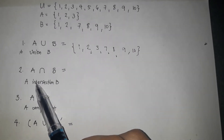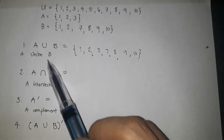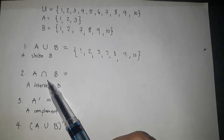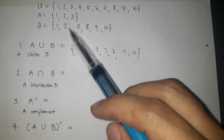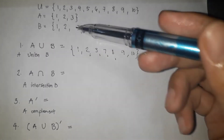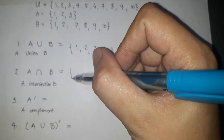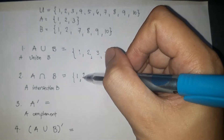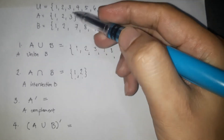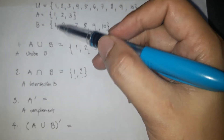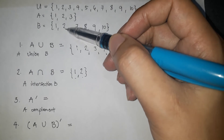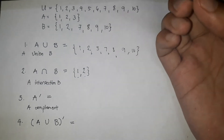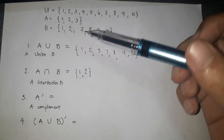The next operation is intersection. So A intersection B. Unlike union, the intersection means: what elements in A can also be found in B? So the intersection is 1 and 2, because only 1 and 2 appear in both sets. Therefore, the intersections are 1 and 2.